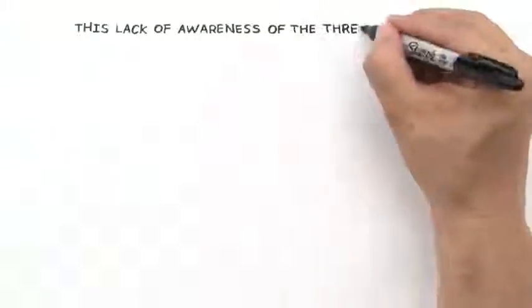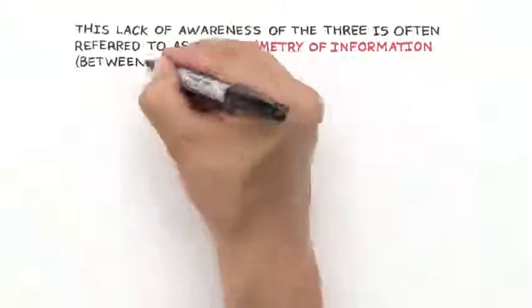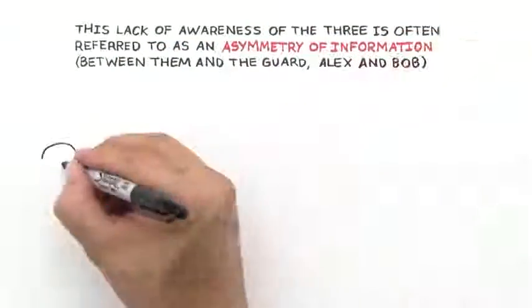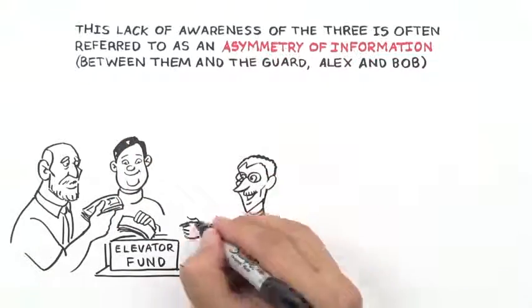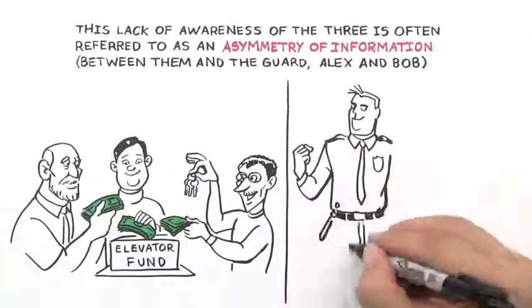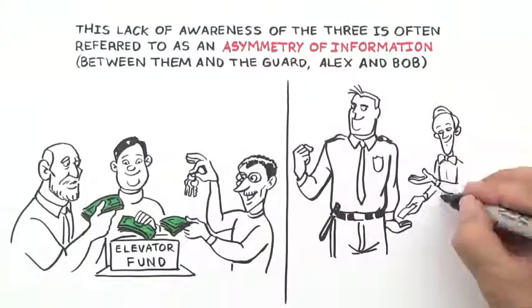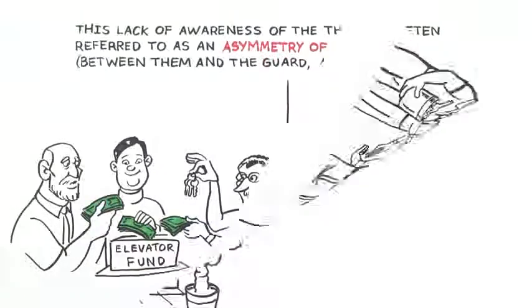This lack of awareness of the three is often referred to as an asymmetry of information between them and the guard, Alex and Bob. If the three had found out about the side deal, they could have confronted Alex and Bob in the guard, and find some resolution to get Alex and Bob to contribute to the cost of the repairs. Asymmetry of information can often contribute to the lack of collective action.